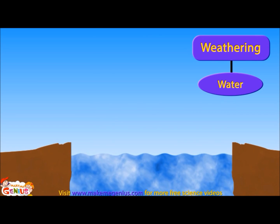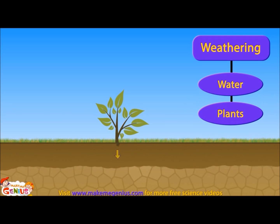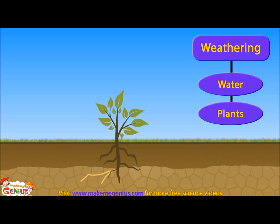There is another way in which water causes weathering. Water in the river breaks the soil on the sides by first making it soft and wet. Plants are also responsible for weathering. See, a plant is growing on a rock. Its roots are going deep in search of water. The roots are trying to make space to grow further, which results in cracks and breakdown in the rocks.